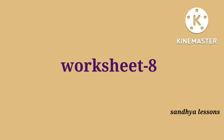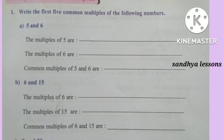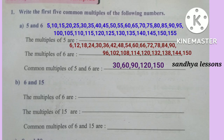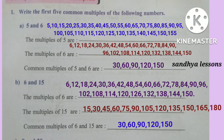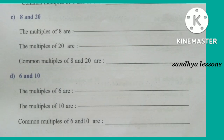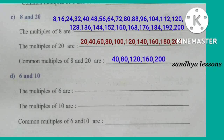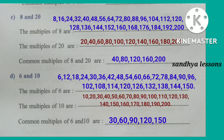Worksheet 8, First Roman: Write the first 5 common multiples of the following numbers. Common multiples of 5 and 6 are 30, 60, 90, 120, 150. Common multiples of 6 and 15 are 30, 60, 90, 120, 150. Common multiples of 8 and 20 are 40, 80, 120, 160, 200. Common multiples of 6 and 10 are 30, 60, 90, 120, 150.